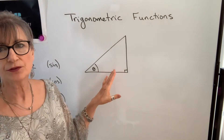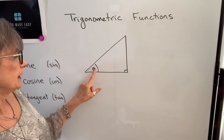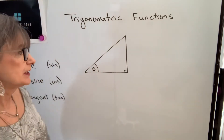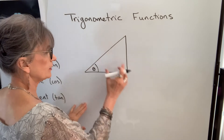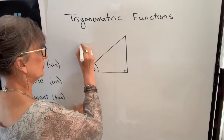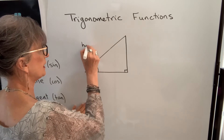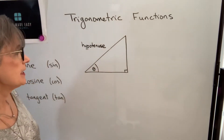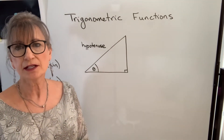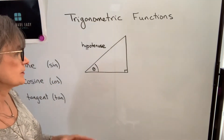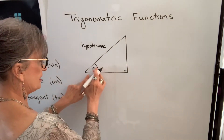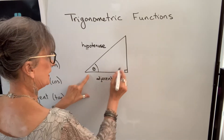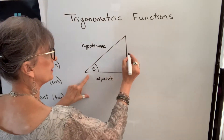To start with, I want to define the sides of this right triangle, and I'm going to give them names in relation to this angle theta. First of all, the side across or opposite the right angle is always called the hypotenuse, and it's always the longest side. Then we have two other sides: one's going to be adjacent to the angle, one's opposite the angle. So this side here is adjacent to the angle, so we call this the adjacent side. And this side here is opposite the angle, so we call it opposite.